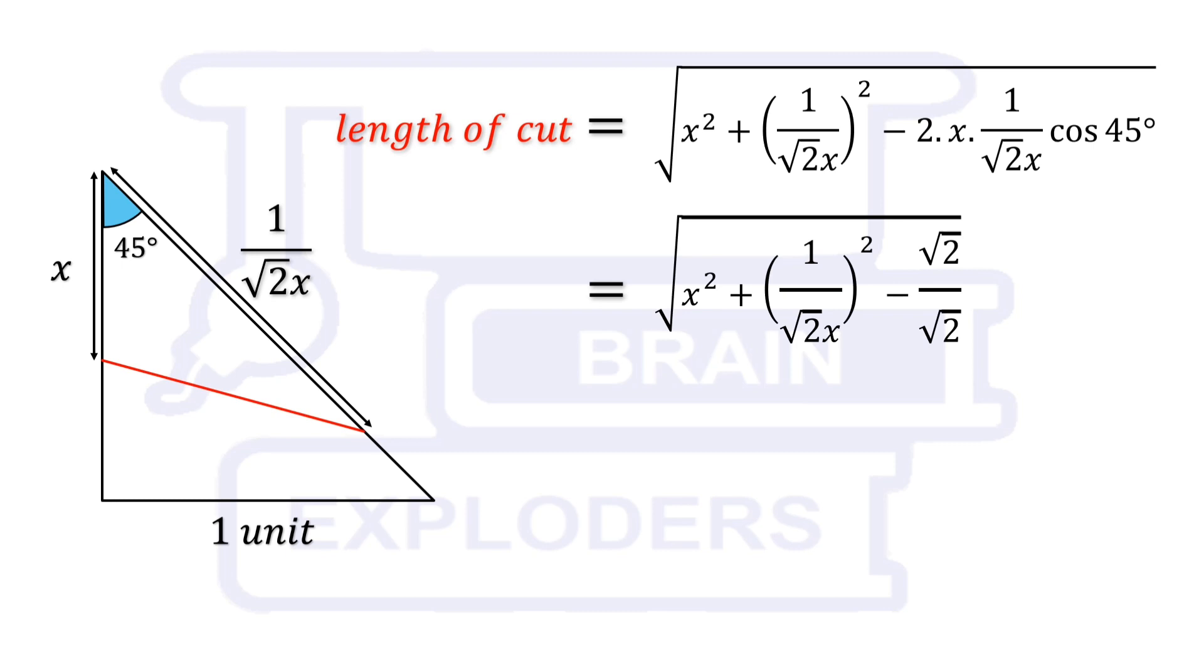First two terms written inside root are in the form of a squared plus b squared. We need plus or minus 2ab to convert it into a whole squared. We have to add as well as subtract 2x over root 2x so that the value remains unchanged.